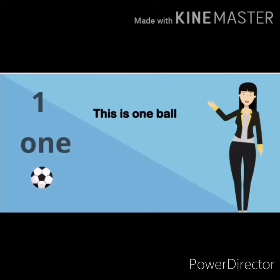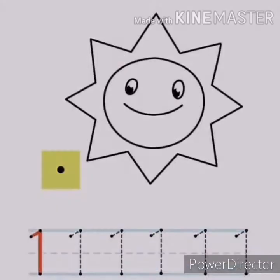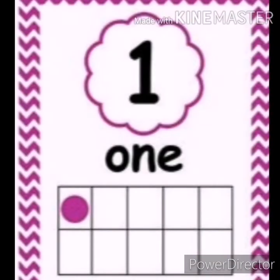One ball. This is one ball. Let's count: one. How many balls are there? There is one ball. What is this number? Number one. How many dots? One dot. What is this number? This is number one.